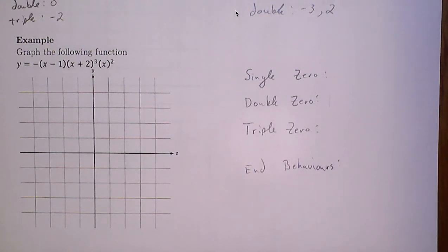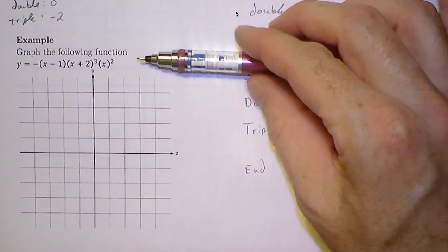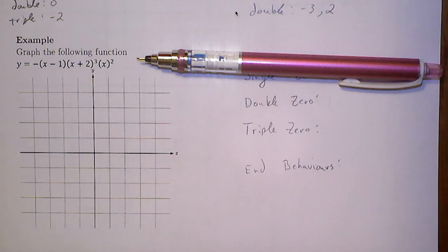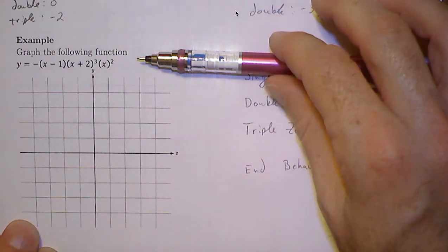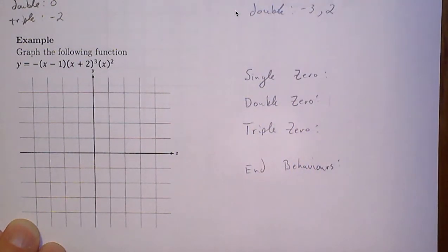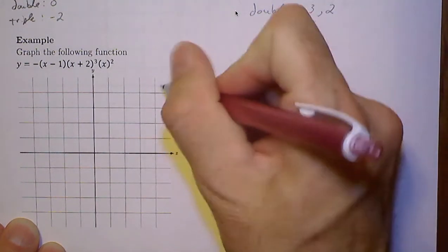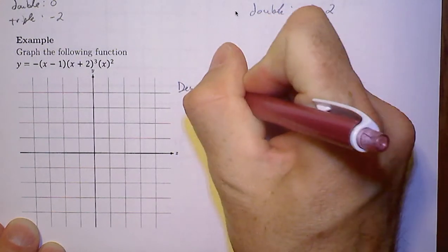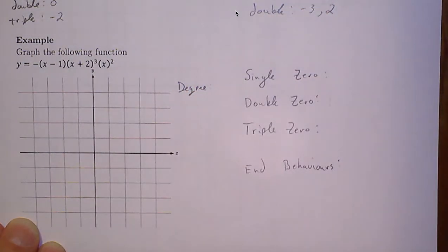For a practical example, and I'll say practical in air quotes there, I'm going to start to graph the following function. Some very important things to pick out are what is the degree of the equation? That is very important for the overall shape of the graph.